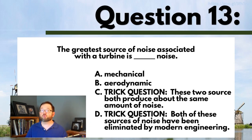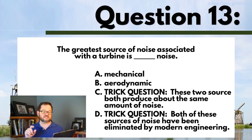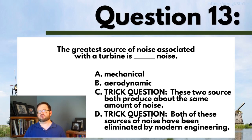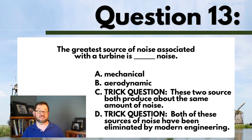Question 13: The greatest source of noise associated with the operation of a wind turbine is: A, mechanical noise; B, aerodynamic noise; C, these two sources produce about the same amount of noise; or D, both of these sources of noise have been more or less eliminated by modern engineering. Make a choice for those four options and get a little feedback before you move on to the last question in this lecture.